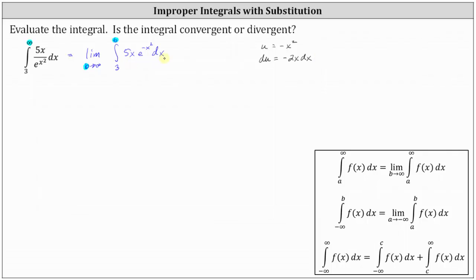Notice we have five x dx. Let's go ahead and solve for x dx by dividing both sides by negative two. Simplifying, we have negative one-half du equals x dx. So the next step we'll write the integral with respect to u. In doing this, let's go ahead and factor out the five, and then x dx is equal to negative one-half du.